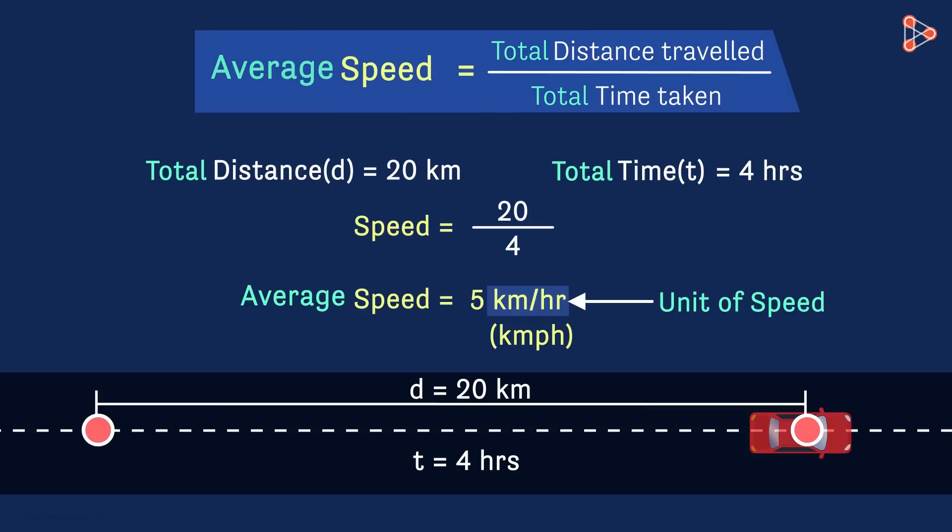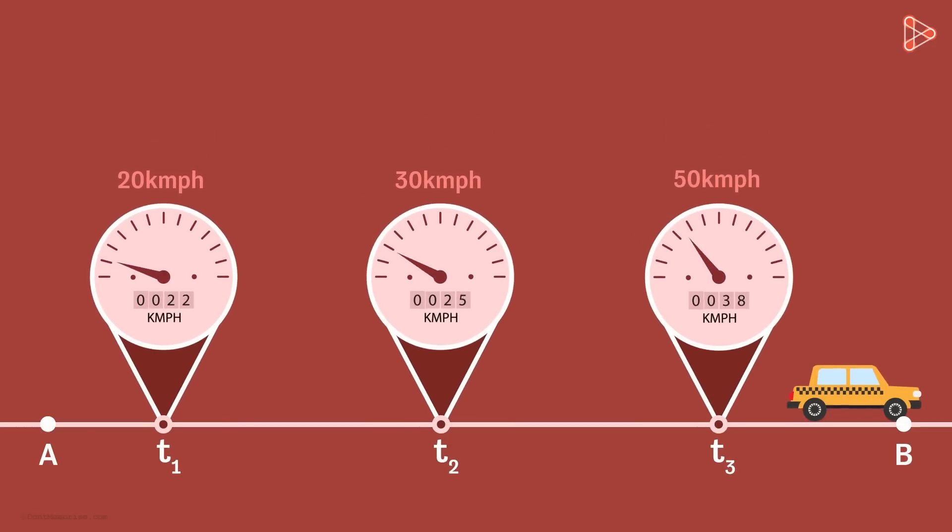Yes, this unit is also used in speedometers. Suppose a car is travelling from point A to point B and the speedometer shows these values at these three instants. Notice at time t2, the speedometer reads 30 kilometers per hour. What does that mean?